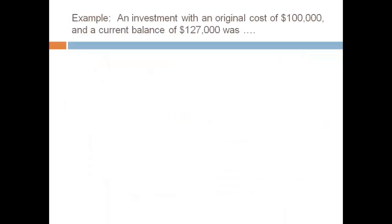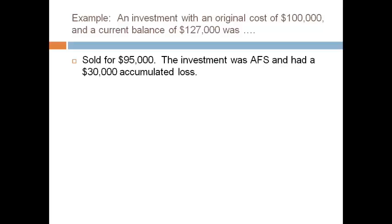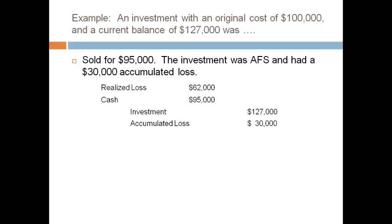An investment with an original cost of $100,000 and a current adjusted balance of $127,000 was sold. The entry to record the sale depends on the method of accounting for the investment. If the investment was available for sale, it will have a balance in the accumulated gain/loss account. Follow the four steps: record the cash, remove the investment at the current balance, remove the accumulated loss, and since the journal does not balance, balance the entry with a debit to realized loss.